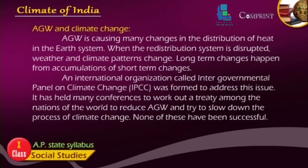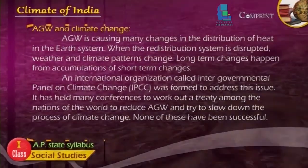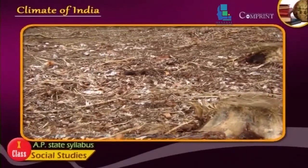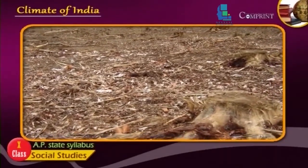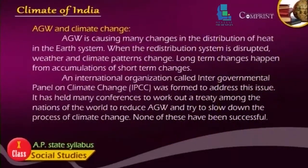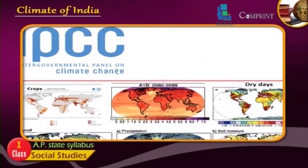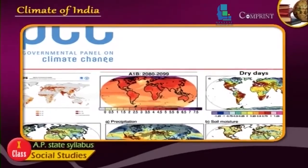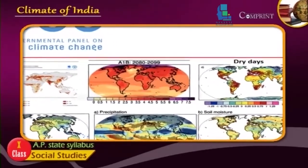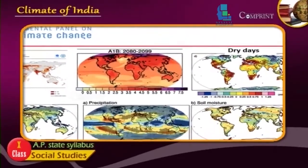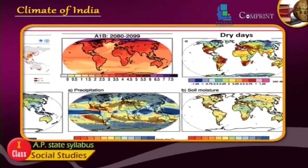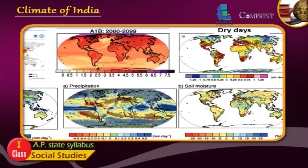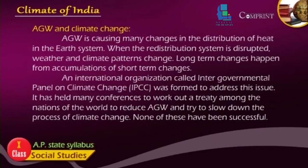AGW is causing many changes in the distribution of heat in the Earth's system. When this redistribution system is disrupted, weather and climate patterns change. Long-term changes happen from the accumulation of short-term changes. An international organization called the Intergovernmental Panel on Climate Change was formed to address this issue. It has helped organize many conferences to work out a treaty among the nations of the world to reduce AGW and slow down the process of climate change. None of these have been fully successful.